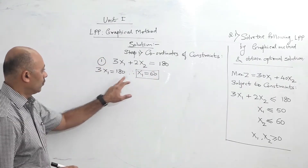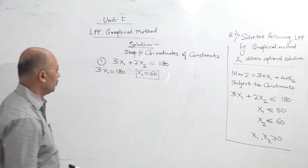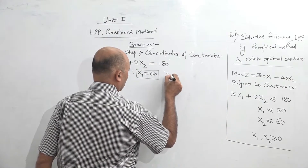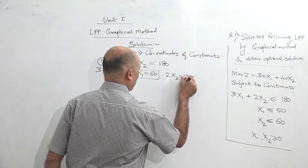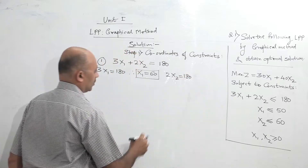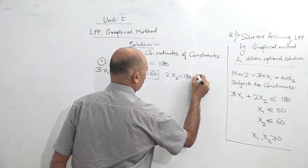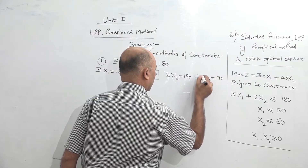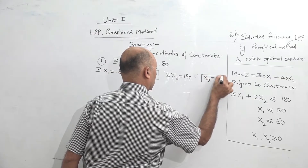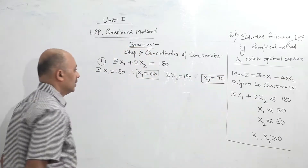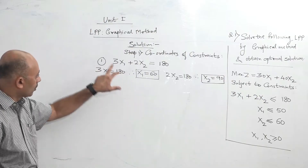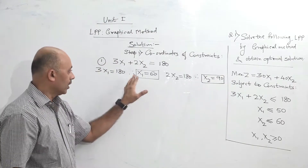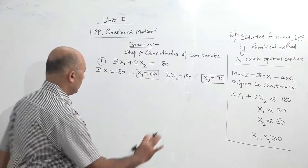Similarly, when you want to find the value of x2, assume that x1 is 0. So we get 2x2 is equal to 180, so 180 divided by 2, we get x2 equal to 90. So for the first constraint, our values are x1 is 60 and x2 is 90.